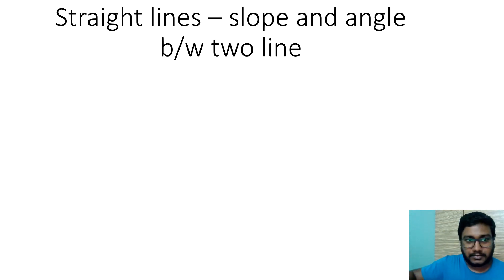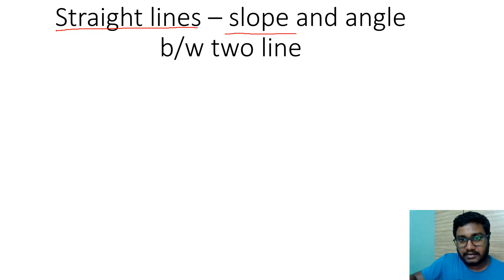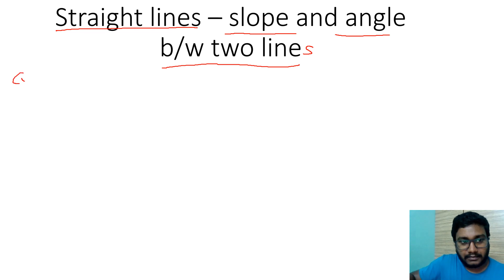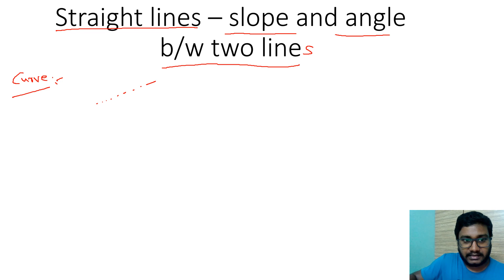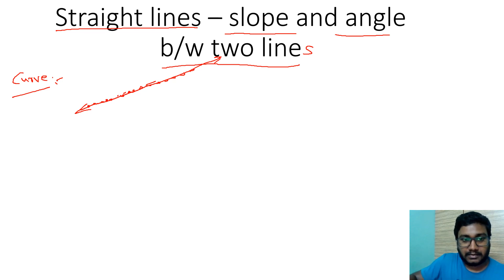Today's topic is straight lines — the definition of a straight line, slope, and the angle between two lines. A straight line is a curve formed by a set of points. If you choose any two arbitrary points and draw a line segment, then extend it on both sides, the curve that is formed is called a straight line.